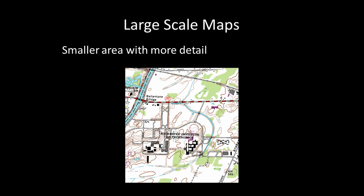A large-scale map shows a smaller area with more detail — for example, a 1 to 24,000 scale map like those found in the USGS topographic map series. The ideas of small and large-scale maps might seem counter-intuitive at first. One might think that a map showing a larger area would be classified as a large-scale map. One way to think of the distinction is that items on a small-scale map are less detailed or smaller, much like features on the ground look smaller when looking out the window when flying in an airplane. The closer one is to a ground feature, the larger it appears.